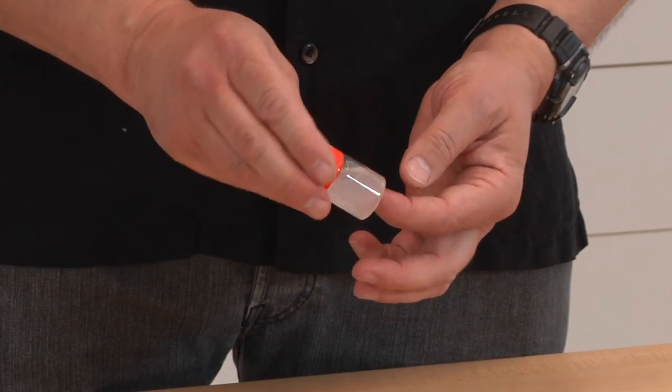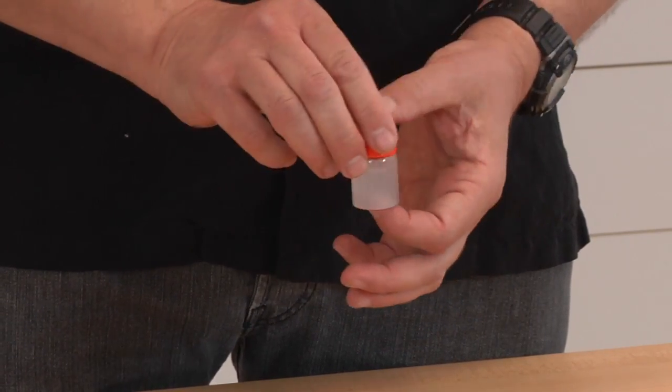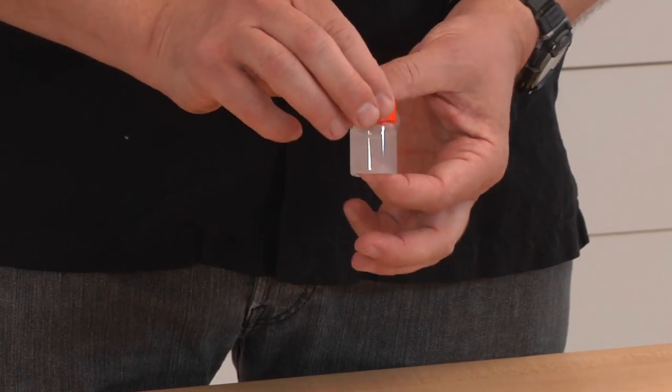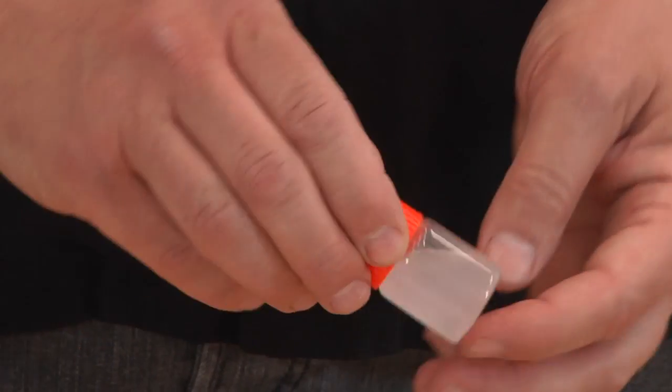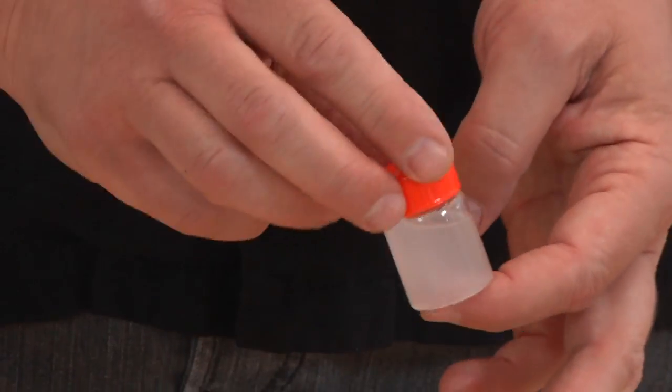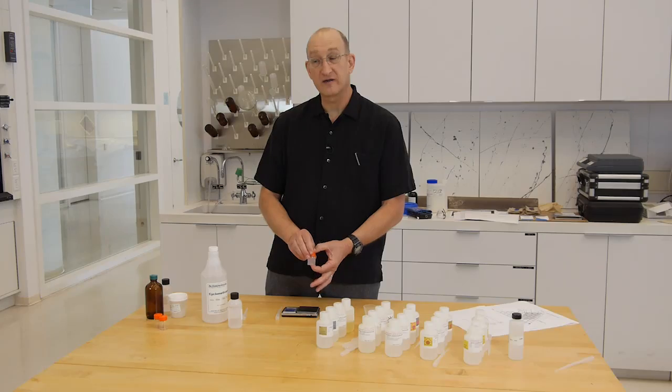Ideally, it should be clear. It's very temperature dependent, so sometimes it'll be a little milky, depending on the temperature we've made it at. But basically, this is a homogeneous material. You can see the viscosity is relatively low, unlike conventional emulsion.